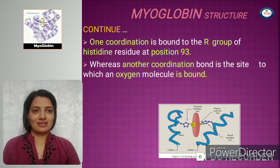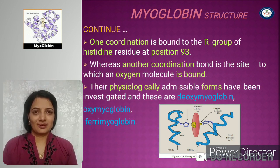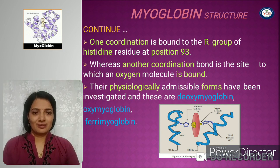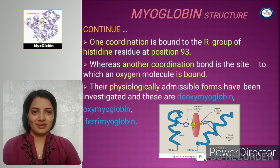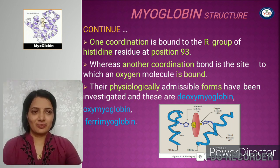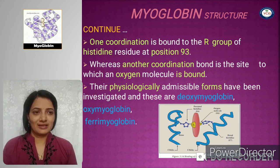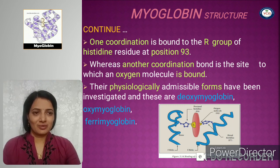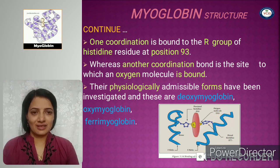These are the details of the cleft or active site of myoglobin. In this active site, one coordination position of the heme group is bound with histidine residue at position 93. This is the proximal histidine, shown in blue color, which is part of the polypeptide chain — this is the histidine ring. In red color is the heme group.